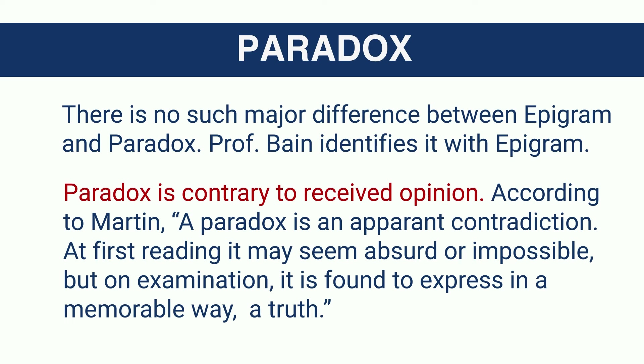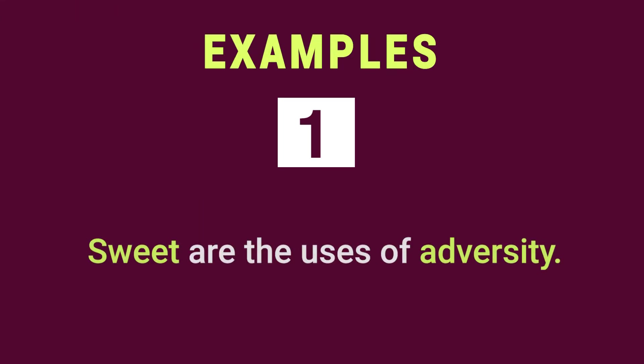Let us look at examples of paradox. Example number one: 'Sweet are the uses of adversity' — a very famous line from Shakespeare. You will find a contradictory idea: how can adversities be sweet? It is epigrammatic as well, so if you analyze this statement from the point of view of epigram, you will be right too. Therefore there is no such difference between paradox and epigram.